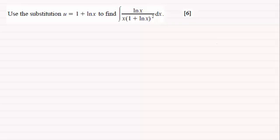Well let's just copy that integral down. We've got then the integral of the natural log of x all divided by x times 1 plus the natural log of x all squared, and we're integrating with respect to x.